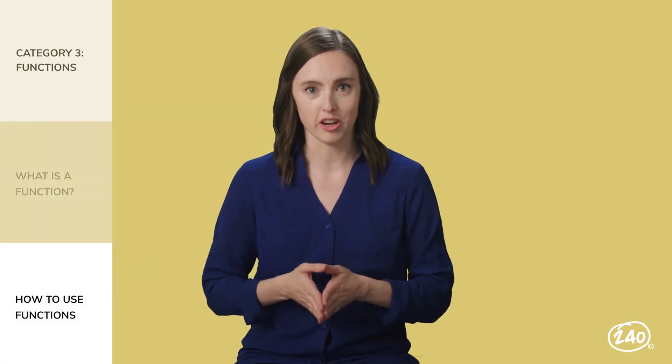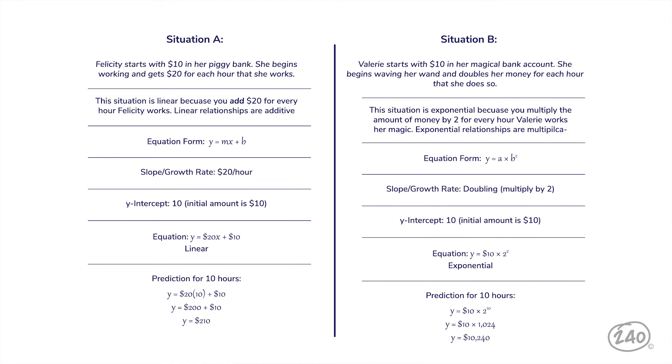Now let's look at how to use functions. In this section, there are a lot of real-world examples. Specifically, you'll need to know the difference between linear functions and exponential functions. In situation A, we see a linear function because the total grows by the same amount — in this case, $20 each time. But in situation B, we see an exponential function because the total grows by an increasing amount each time. You'll need to know how to recognize the different function situations and which equation form to use in each.